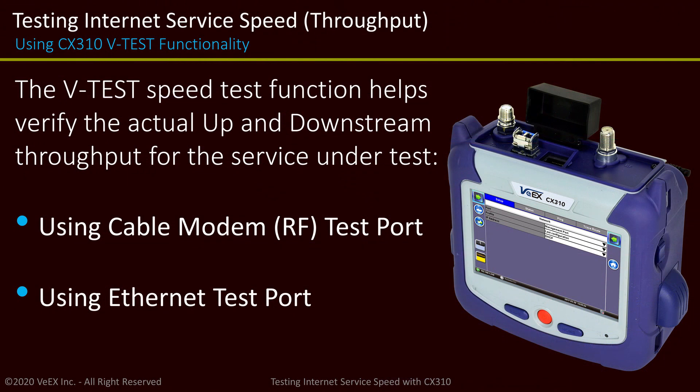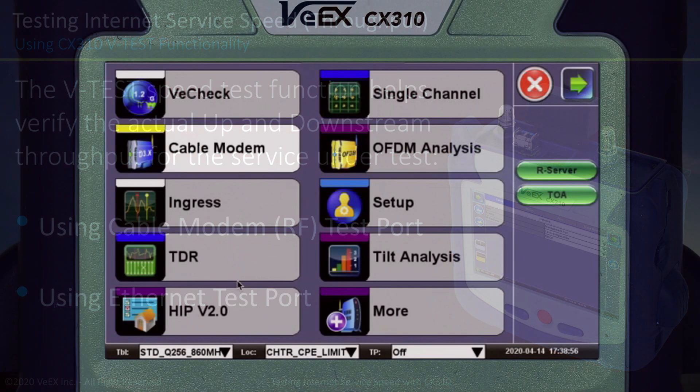I'm going to cover both the RF throughput using the cable modem and also the Ethernet network testing using the Ethernet port on the top of the CX310.